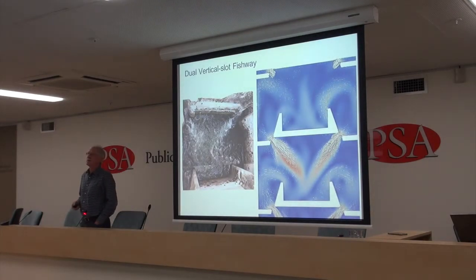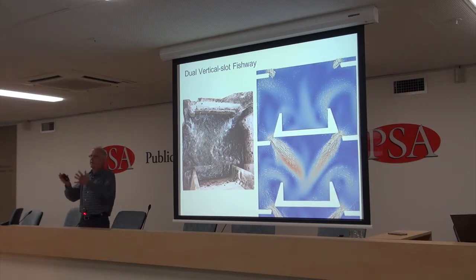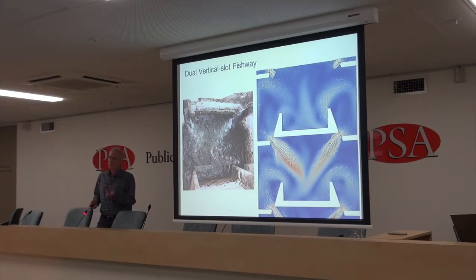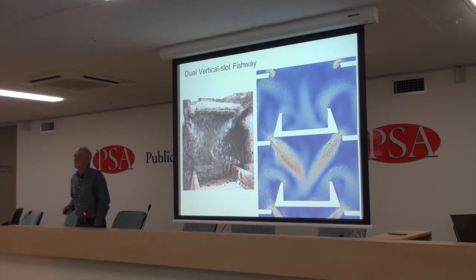A dual vertical slot fishway has water going from top to bottom on the left-hand side, and the jets hit each other and move into the slots. It's essentially the same as the previous design but doubled. It was the original slot fishway design and has been used famously in the US.